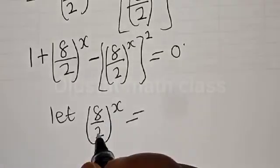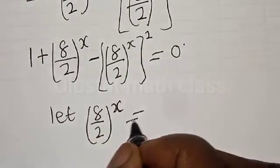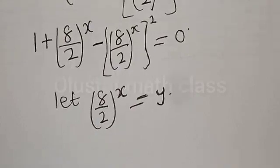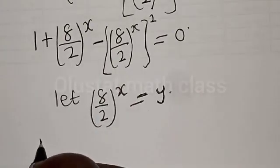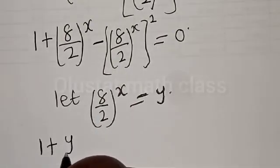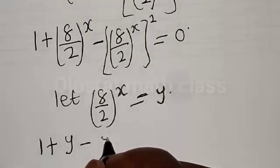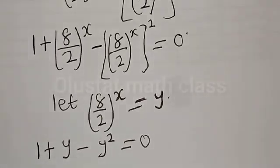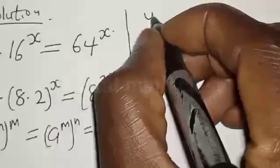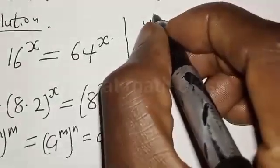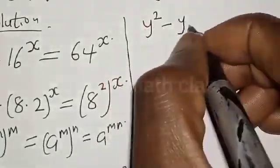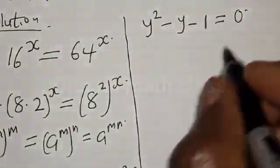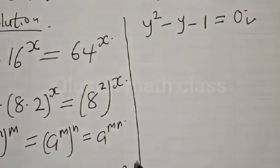Let y equal 1 plus 8 divided by 2 raised to power s. Then we have 1 plus y minus y squared is equal to 0. The equation can be rewritten as y squared minus y minus 1 is equal to 0. This is a quadratic equation.